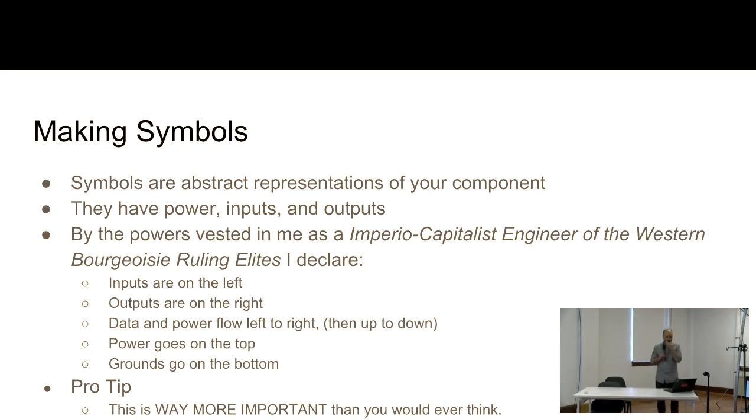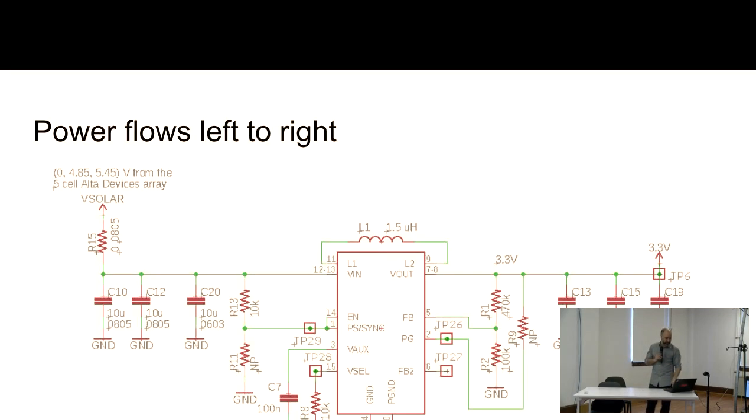This is one of the most important parts that you can do to not make your schematic suck. And that is use symbols that make sense. Symbols are abstract representation of your component. They've got power, inputs, and outputs. I say that inputs are on the left. Outputs are on the right. Data and power flow left to right. Power goes on the top and ground goes on the bottom. Now, when I say that, because that's what we're used to, I don't care who you are. That's true. So this is way more important than you'd think. When you go to a schematic, if you see someone who's done this, you'll understand the part five, ten times faster than you would if they do something different.